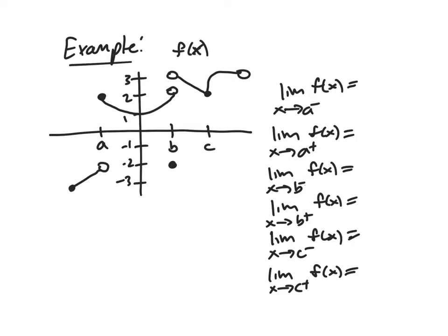And so we have these six one-sided limits that we're going to look at. If you want, you can pause the video here for a second and try to figure them out yourself, and then I will go ahead and talk through them.